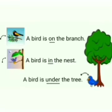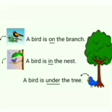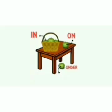Now, the sentences we have to read. A bird is on the branch. Bird kahan par? Branch ke oopar, so we use on. Next: a bird is in the nest — in, because nest ke andar hai. A bird is under the tree — tree ke neechay hai.